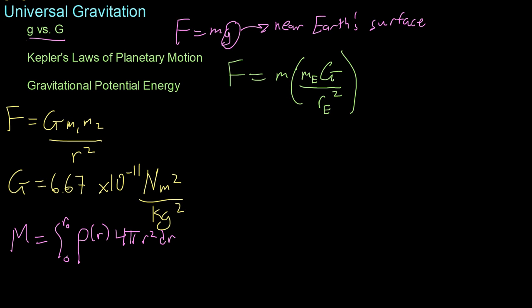And because all of these are constants for all intents and purposes, I mean, the radial distance will change slightly as you go up or down elevation, but not significantly enough to affect the gravitational force you feel, we can approximate this whole term as that little g, and that's the acceleration at Earth's surface.